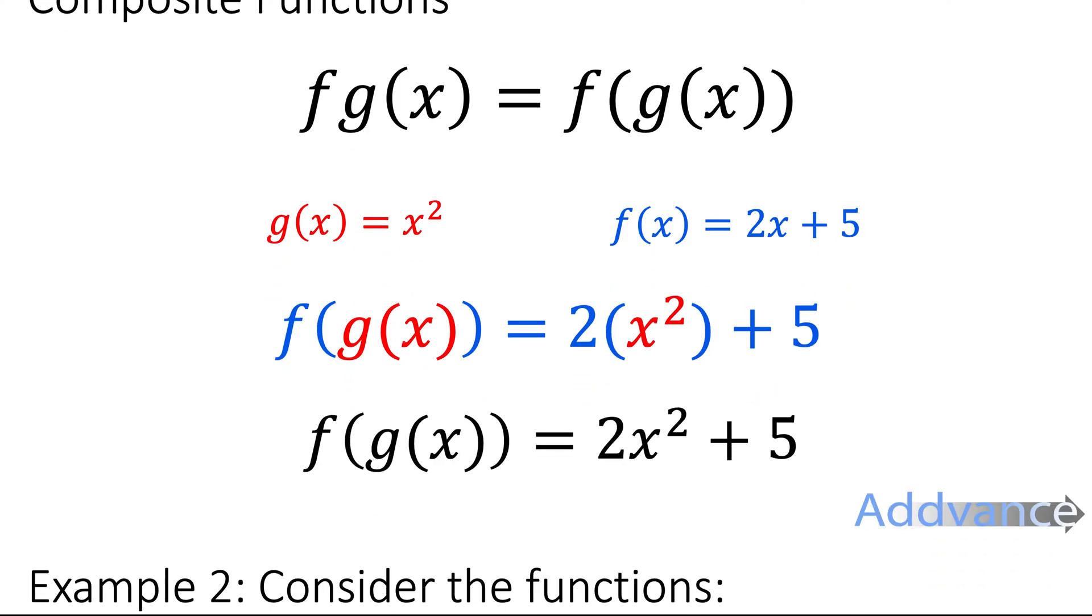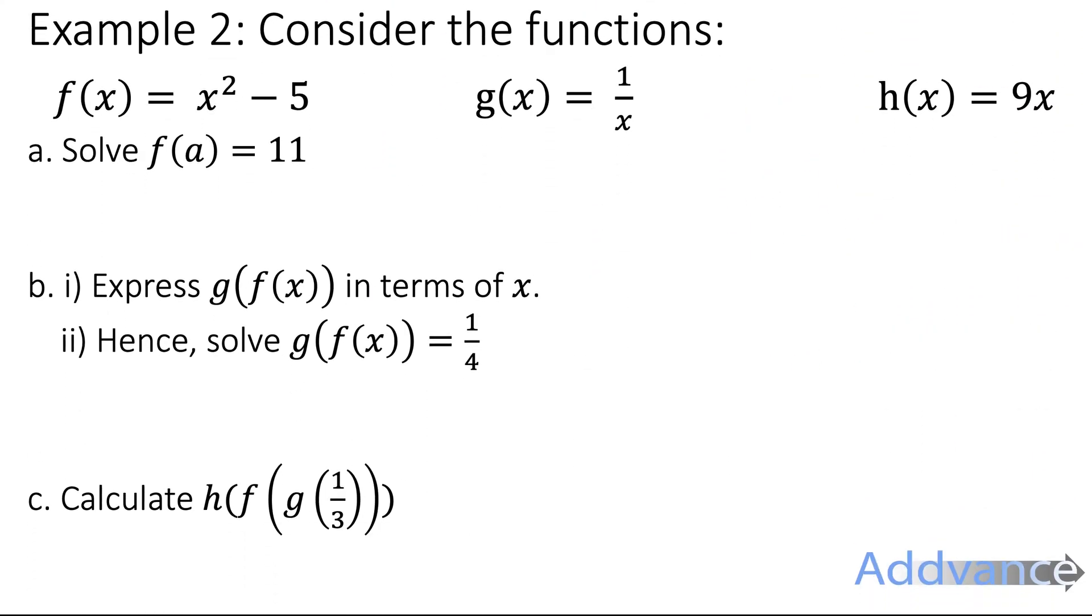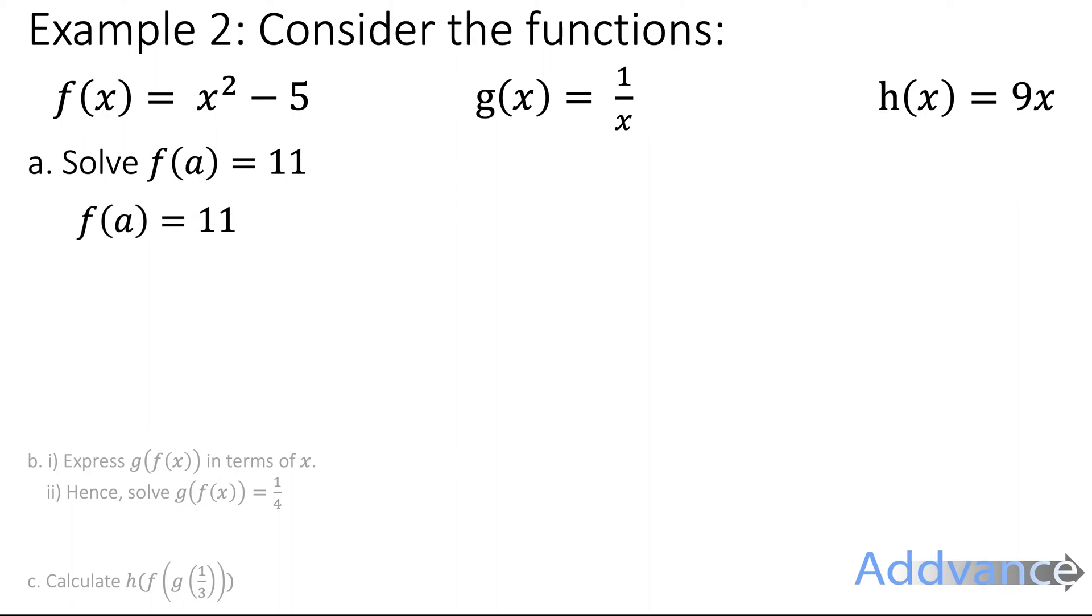So we can say Example 2: we're going to consider the functions here. So question a, solve f of a equals 11. So f of a is equal 11, that means that if you put a into f, we get 11 out. So we're going to write that out as replacing the x in f with a. So a squared minus 5 equals 11.